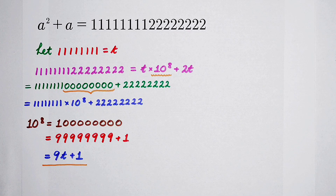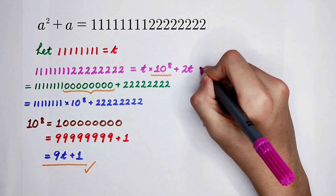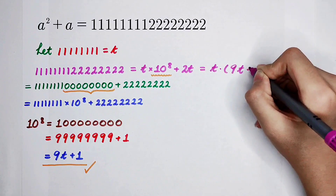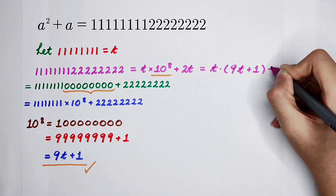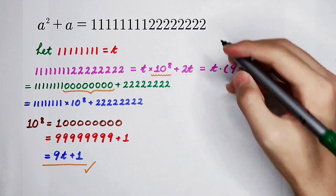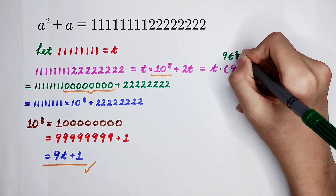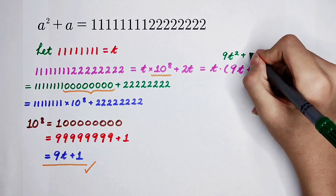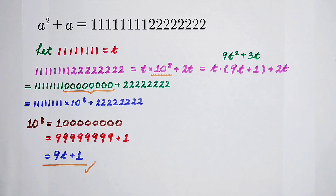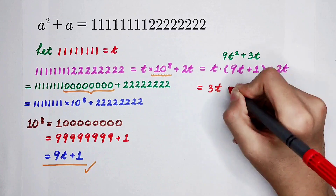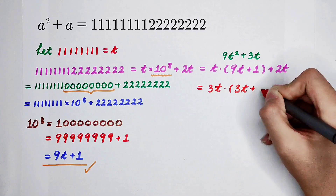These 8 nines can be written as 9 times t, and then plus 1. We've succeeded! So now this becomes t times (9t plus 1), plus 2t. Doing some changes: it is 9t squared plus t plus 2t, which is 9t squared plus 3t.